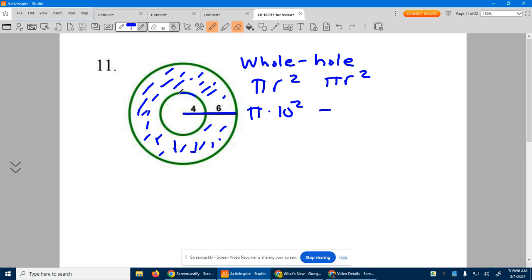which again, this hole right here in the center that we don't care about that doesn't have any of the area we want. We're going to subtract that, which is pi times its radius, 4 squared. So you basically have 100 pi take away 16 pi.